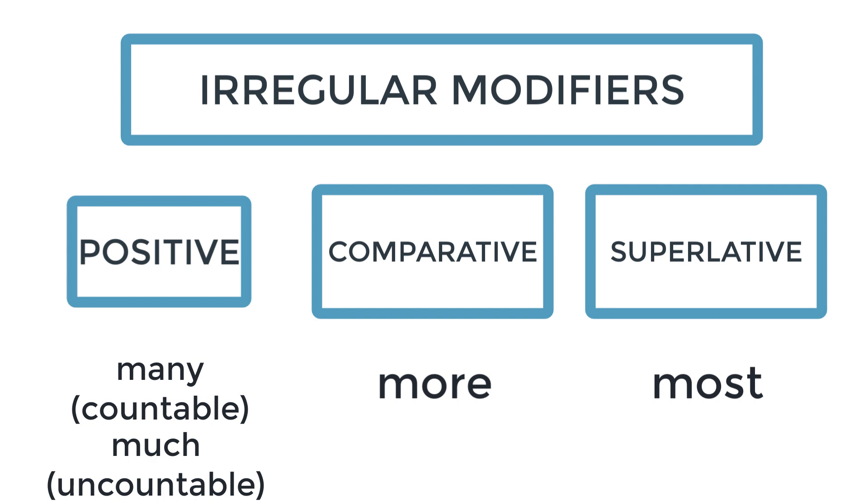The same thing happens for the modifier much. Much and many are related, except much is used for uncountable things. The comparative for much is more, and the superlative for much is most. So you have much, more, and most.